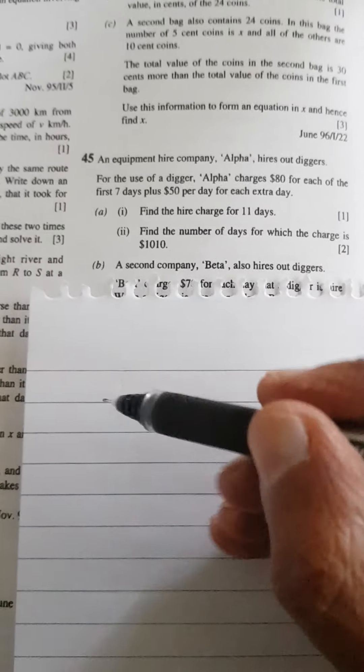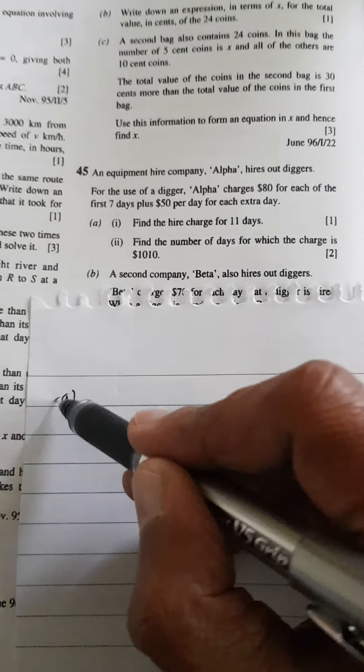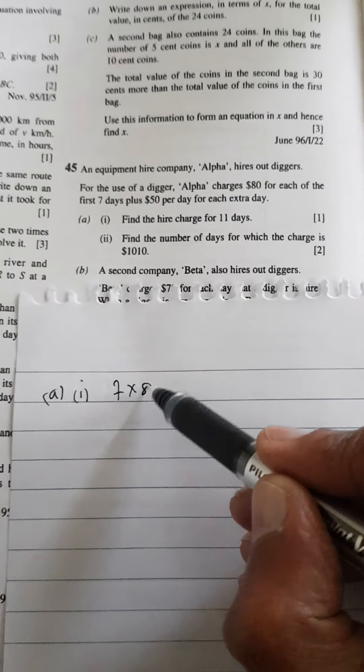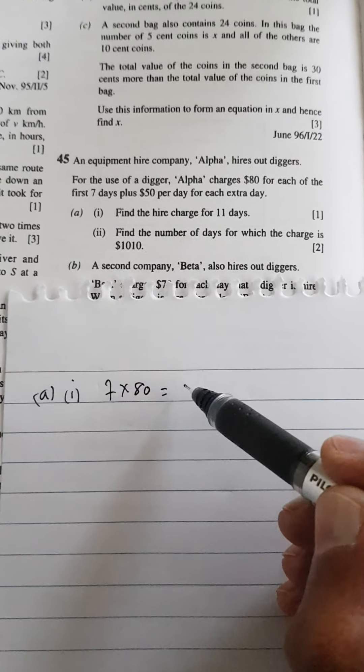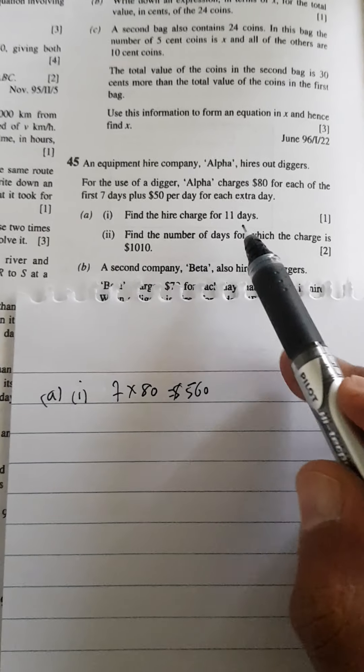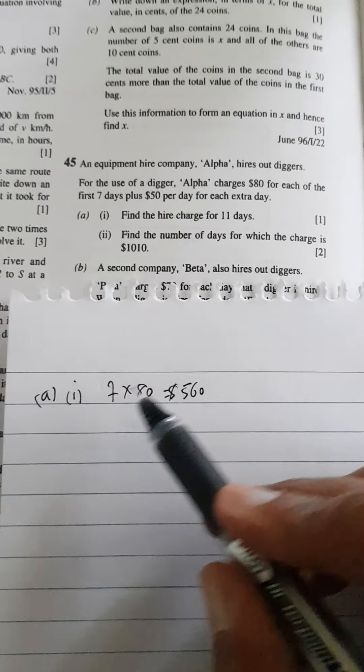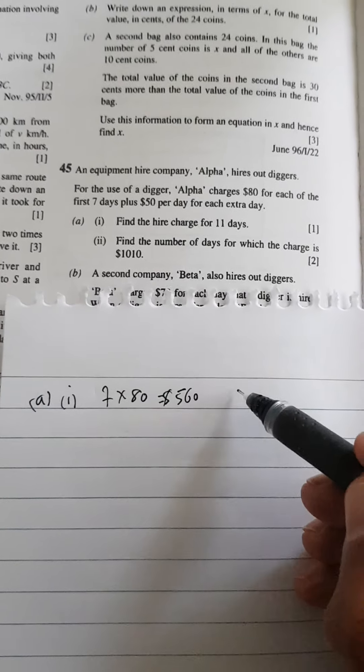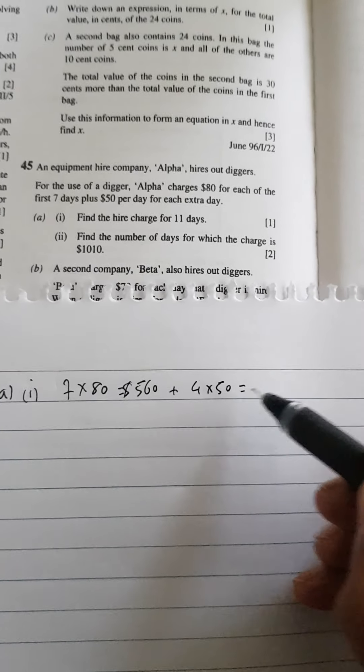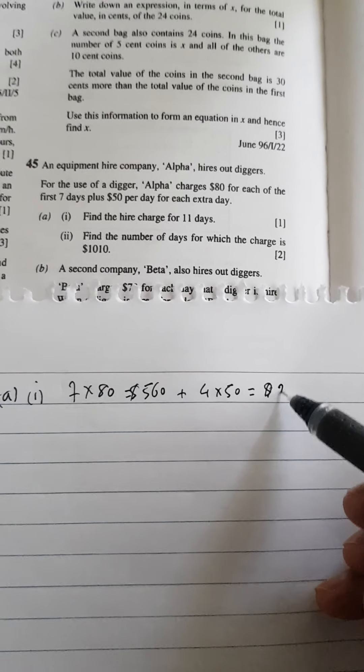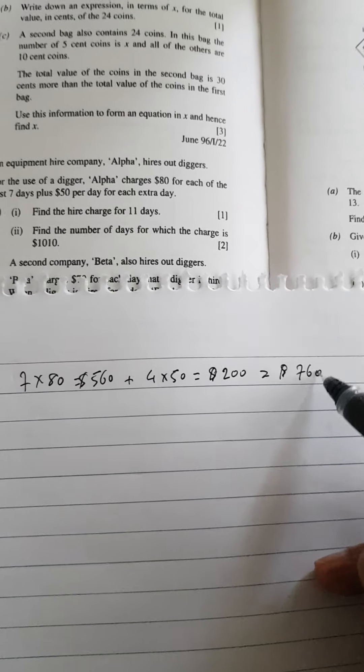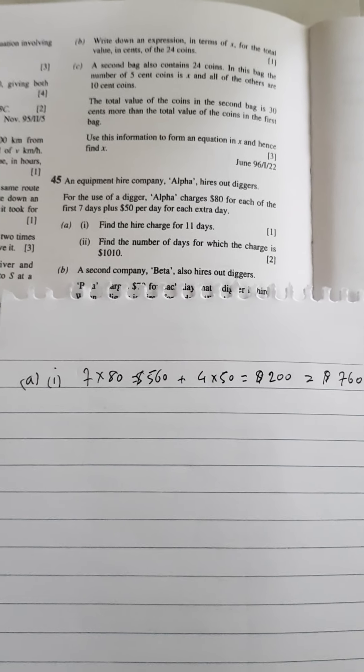Okay, for 11 days, there's no big deal. So what you're going to do, you're going to say 7 days times 80, that's the first 7 days, which is $560. And then for 11 days, 11 minus 7 is 4. So you get plus 4 times $50, which is $200. So you add these two, you should be able to get $760. That's the answer to the first part of the question.